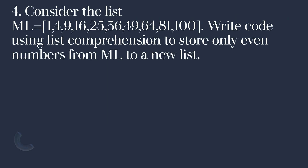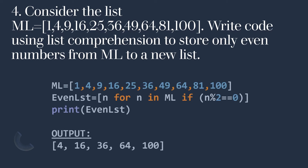Now consider the list ml which has values 1, 4, 9, 16, 25. Write a code using list comprehension to store only even numbers from ml into a new list. ML is defined, and evenlst stores [n for n in ml if n % 2 == 0]. So whatever values present in ml that are even will be stored in evenlst. Print evenlst to see the output.